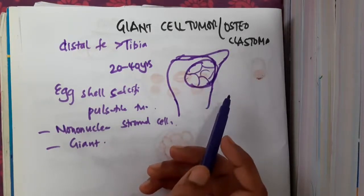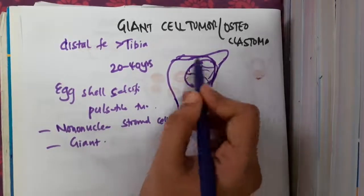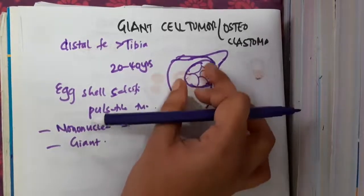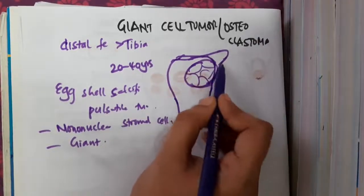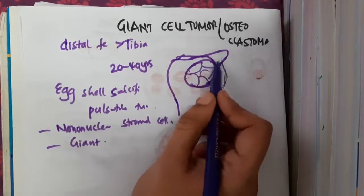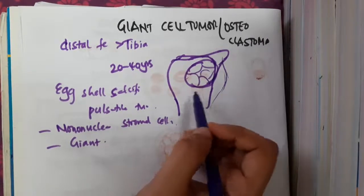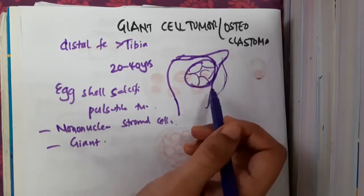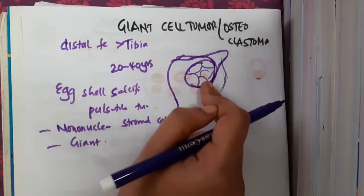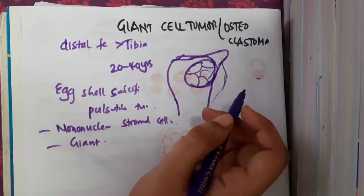The giant cell tumor is the most aggressive tumor — it will go on eating the bone and expands maximally. It can expand in such a way that the bone architecture can be completely lost. There is a risk of malignancy present for giant cell tumor; almost 5 to 10 percent malignant transformation can occur.